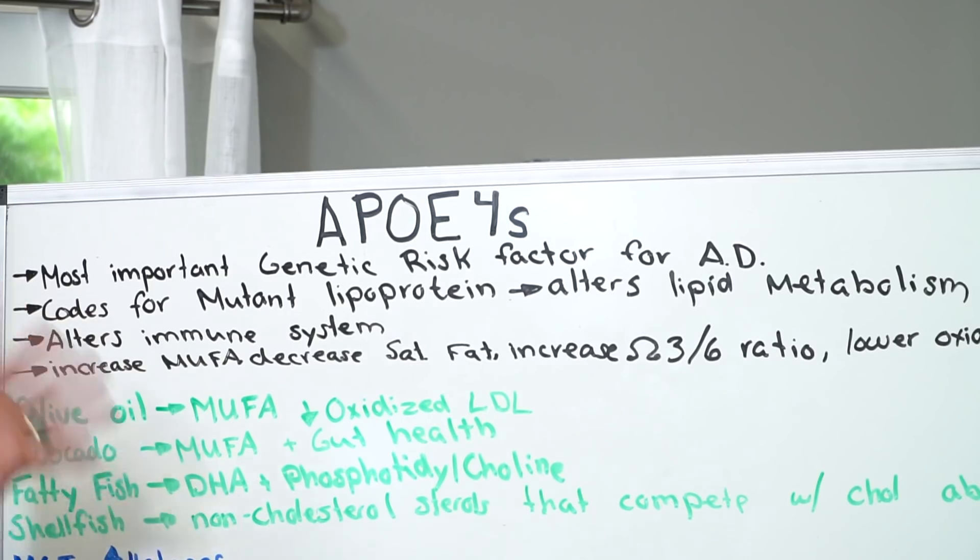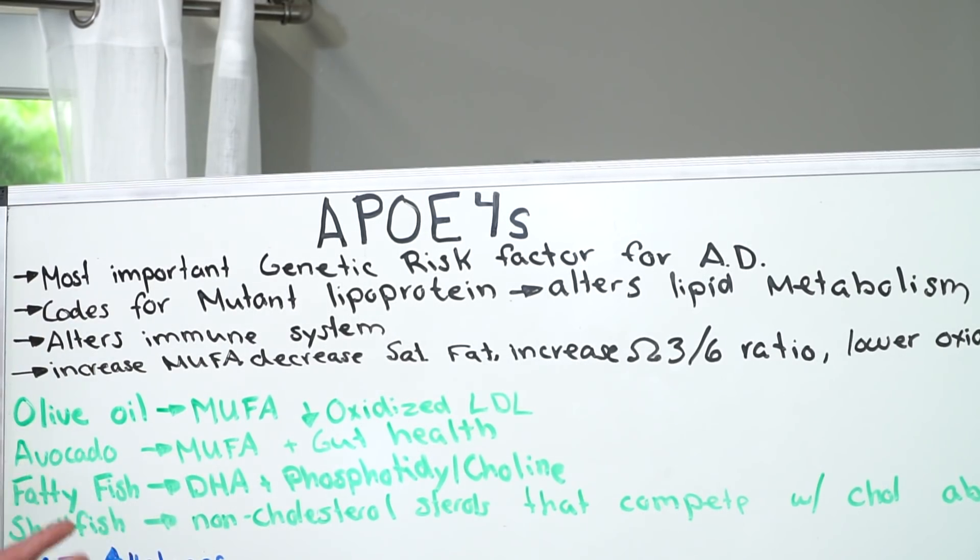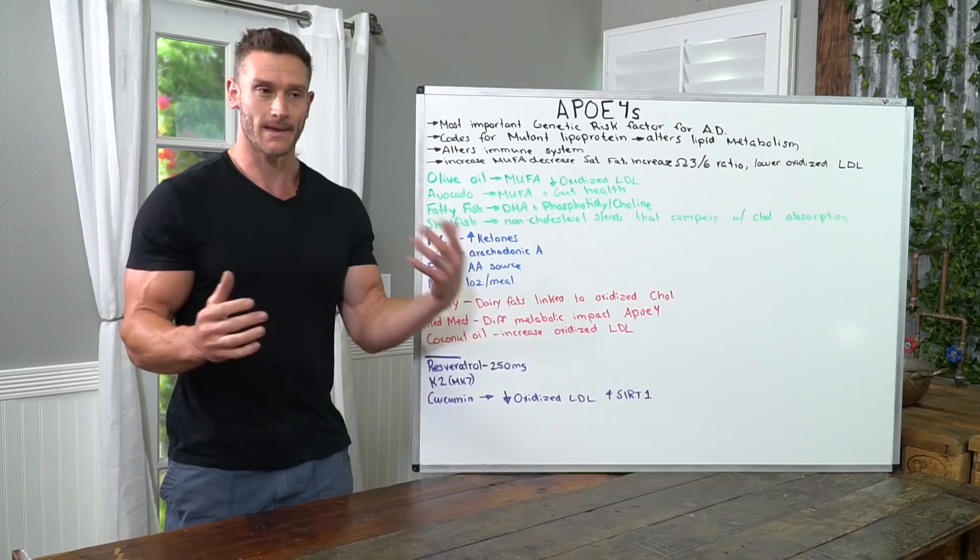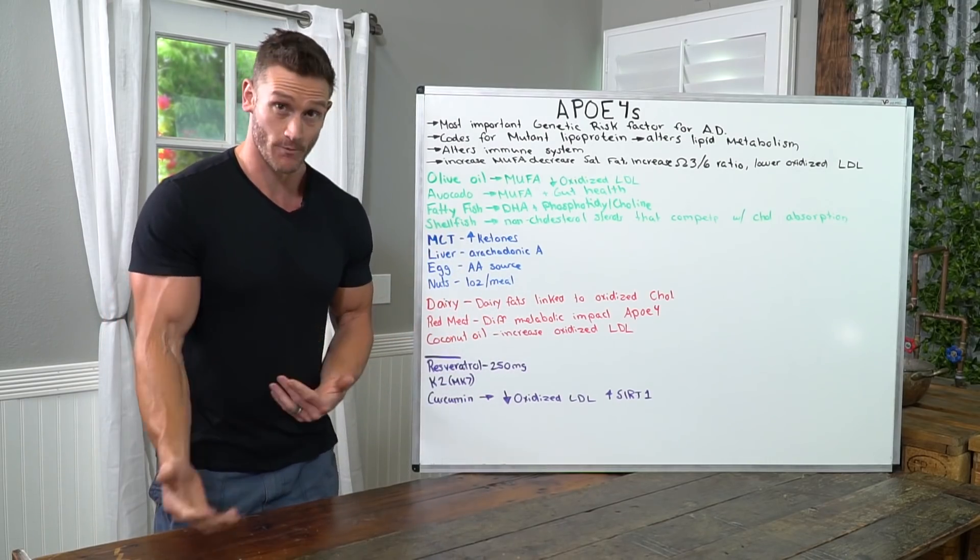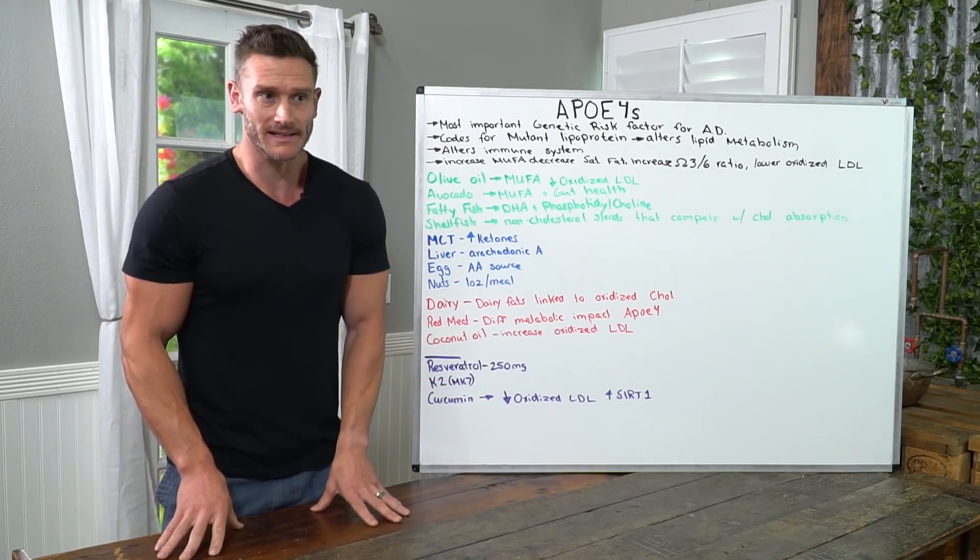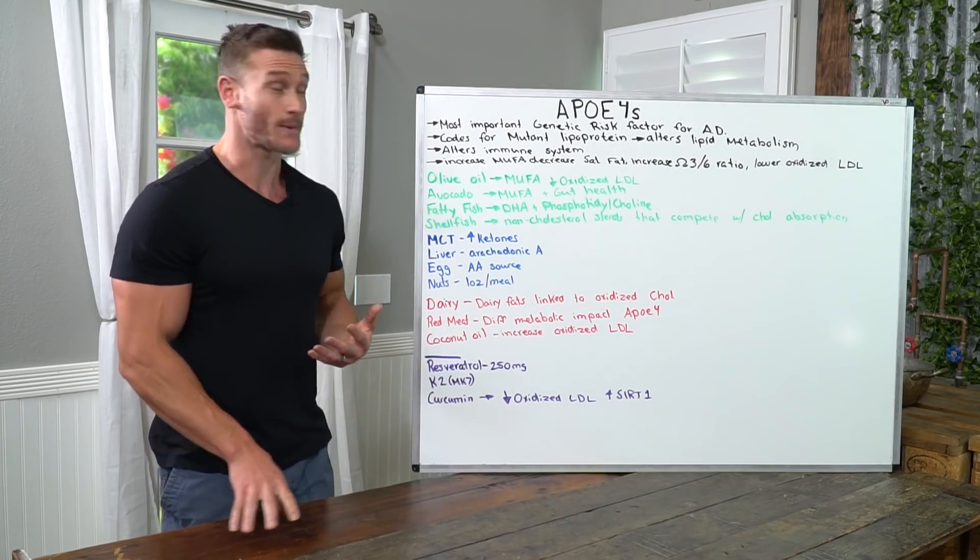It's also kind of the codes for a mutant lipoprotein. So basically it alters your lipid metabolism. It makes it so that if you have this, you don't process fats the same way, which means the ketogenic diet gets really sketchy because you're mainly eating fats, right?